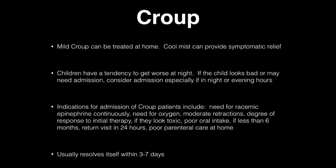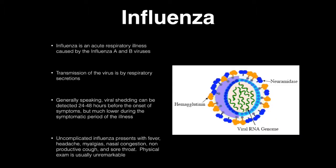The next topic is influenza, which is an acute respiratory illness caused by influenza A and B viruses. Transmission occurs via respiratory secretions. Viral shedding is detected 24 to 48 hours before the onset of symptoms but is much lower during the symptomatic period — meaning you are actually most contagious before symptoms appear.